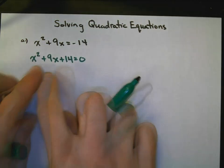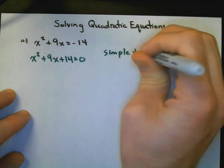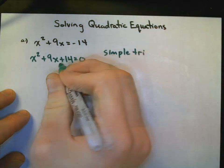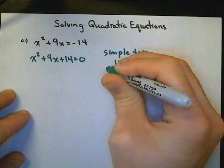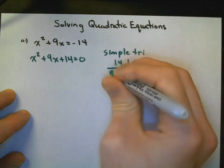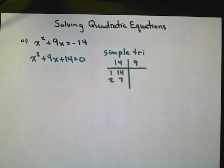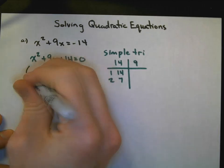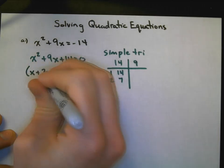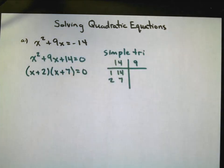We see that this is a simple trinomial. That means we're looking for two numbers that will multiply to the last term and add to this middle term of 9. That could be either 1 and 14 or 2 and 7. It's quite easy to tell that 2 and 7 are my numbers. In factored form: (x + 2)(x + 7) equals zero.